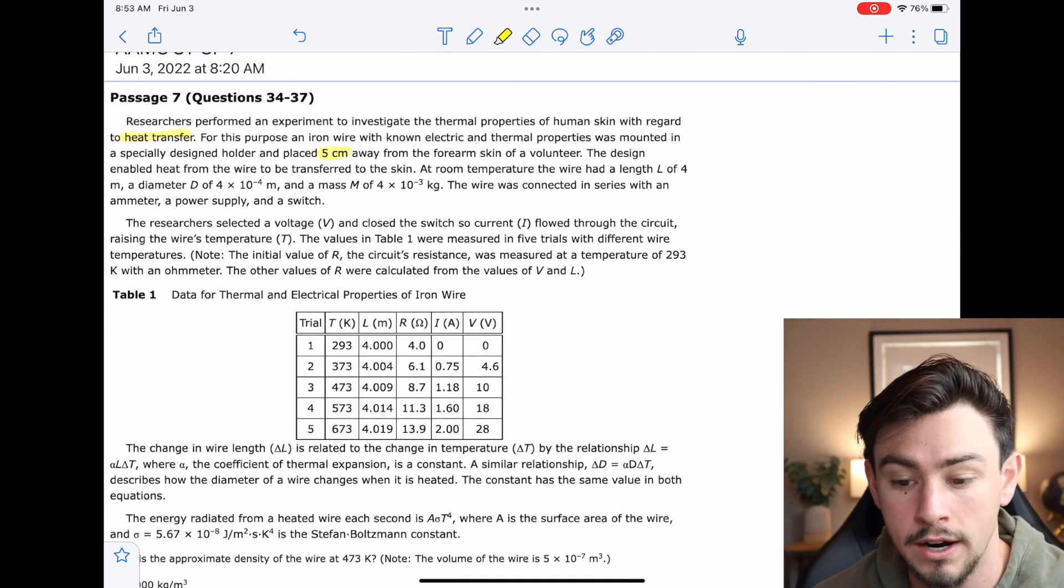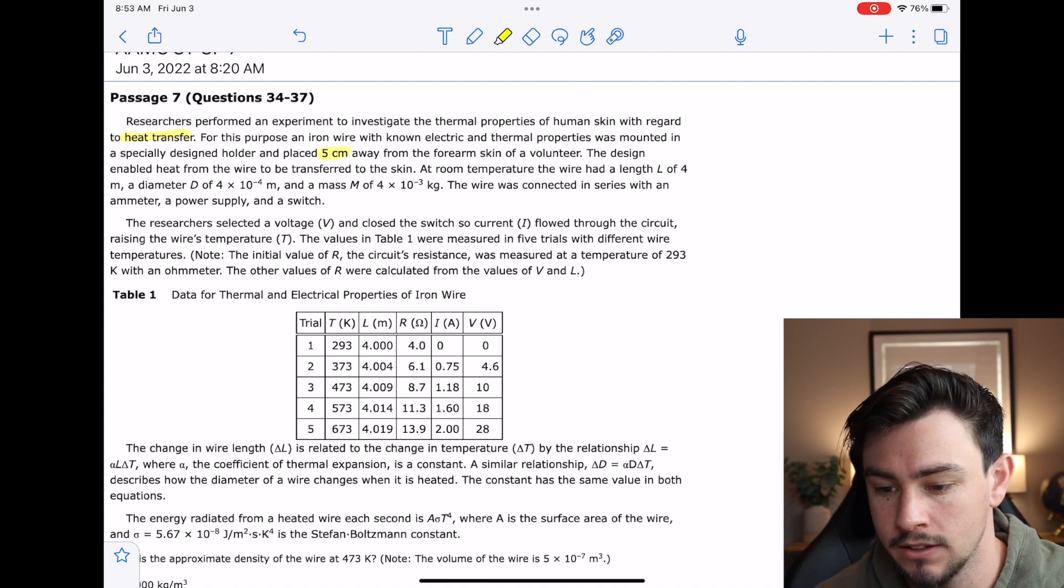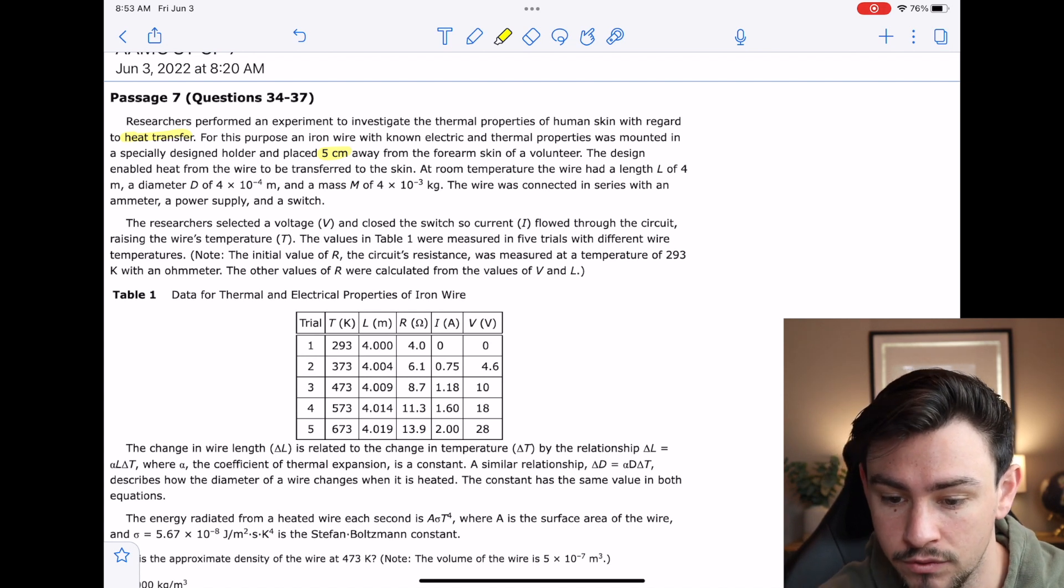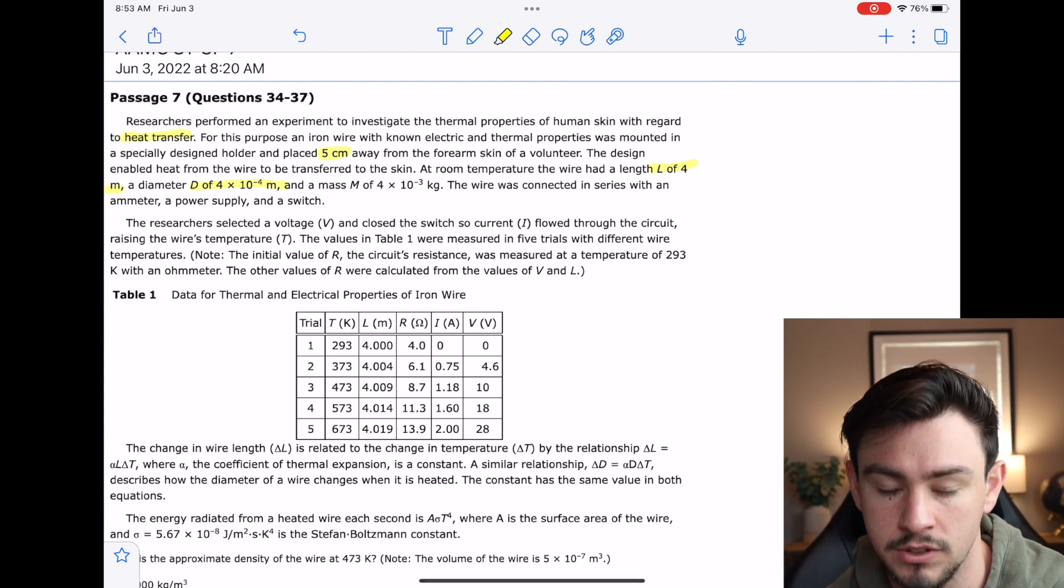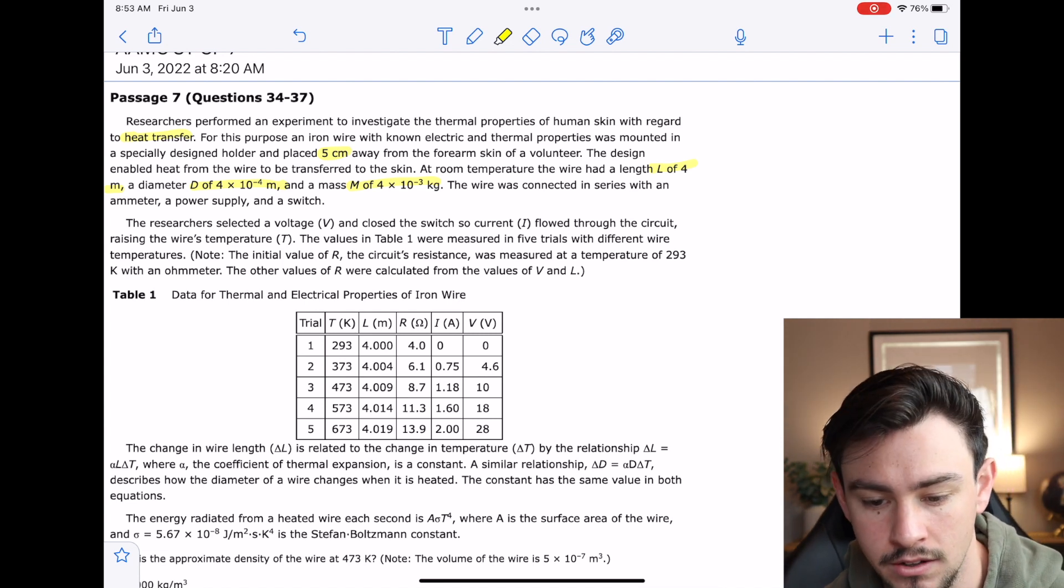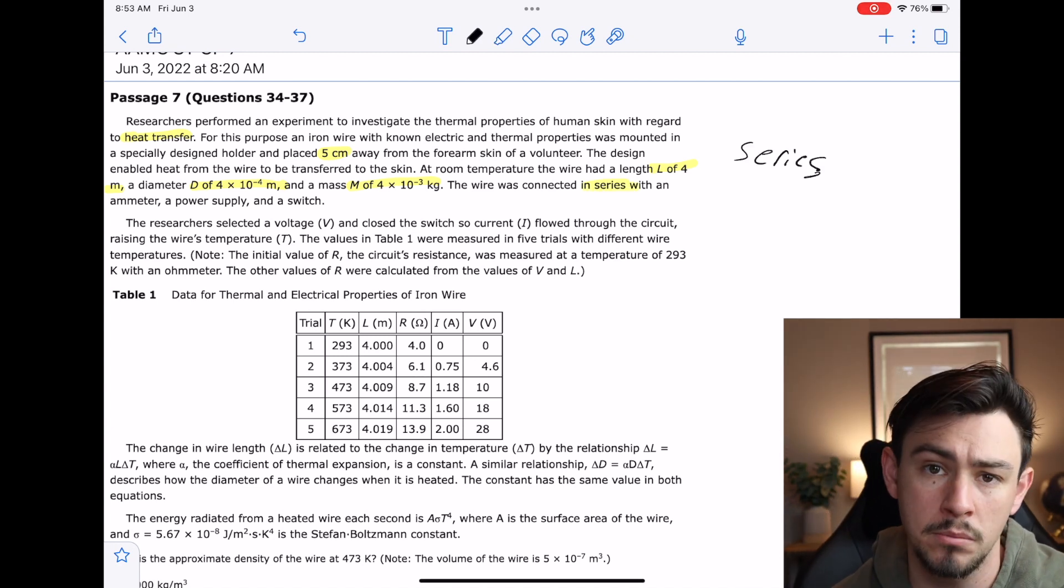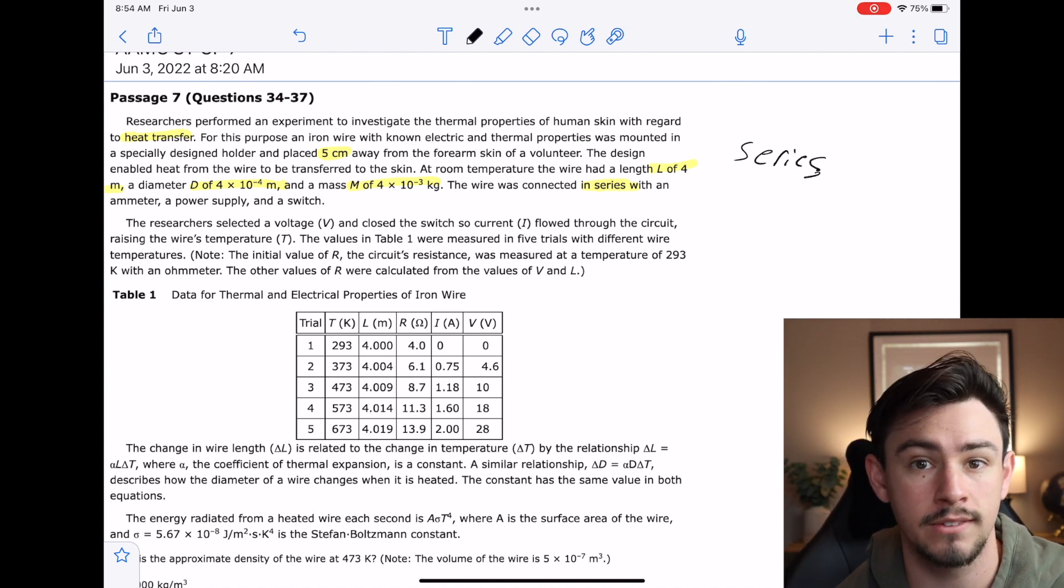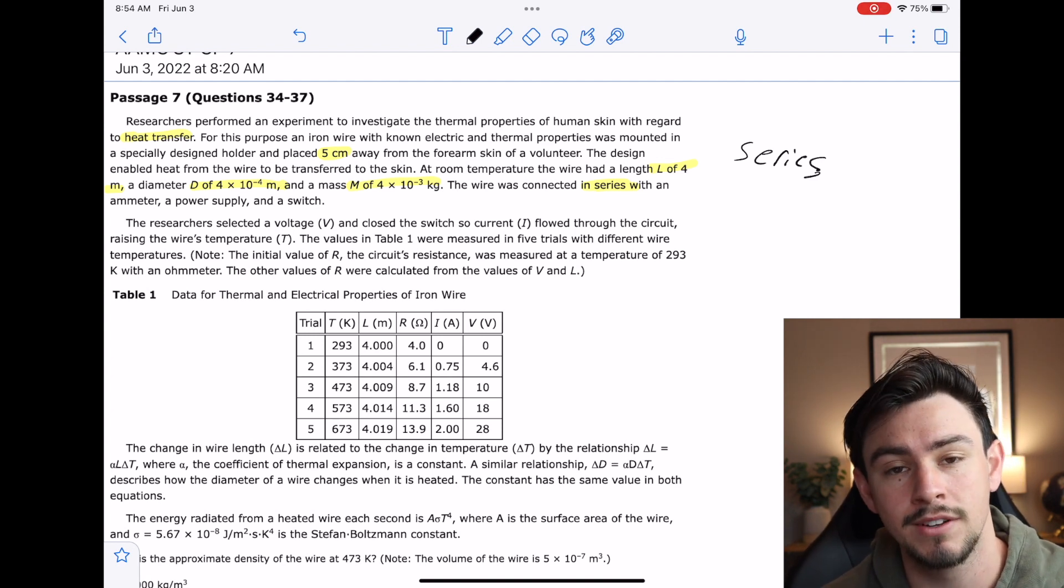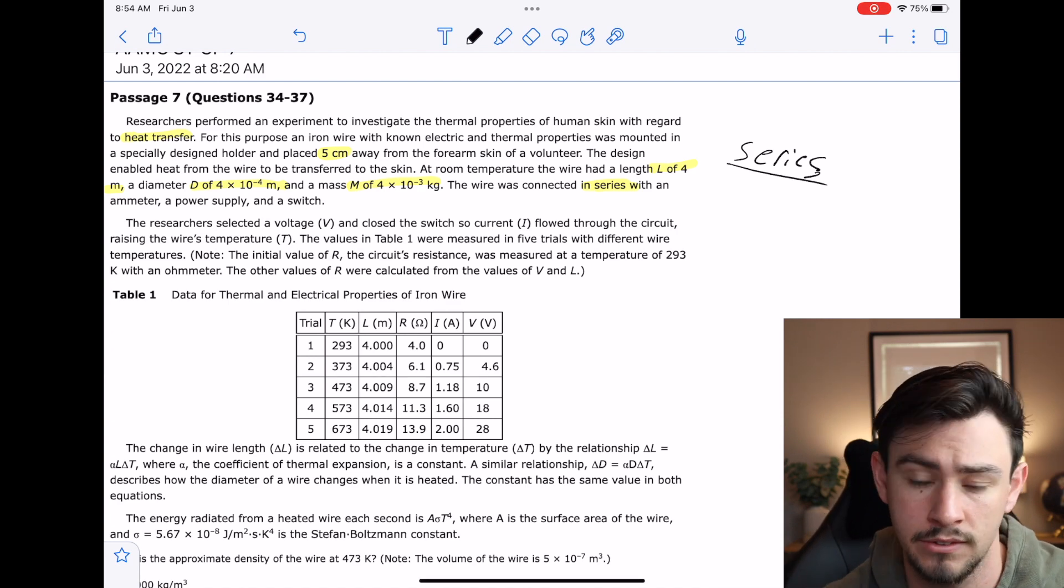Something that I haven't really shown you very frequently is that I do go ahead and highlight these values just so I know where to find them, because this passage is reading very physics-y. And generally when something is reading very physics-y, the actual questions are just algebra, and so you have to go and find those numbers. The design enabled heat from the wire to be transferred to the skin. So they're just pretty much saying whenever you hold your hands close to a fire and you can feel it radiating, that's all they're really talking about here.